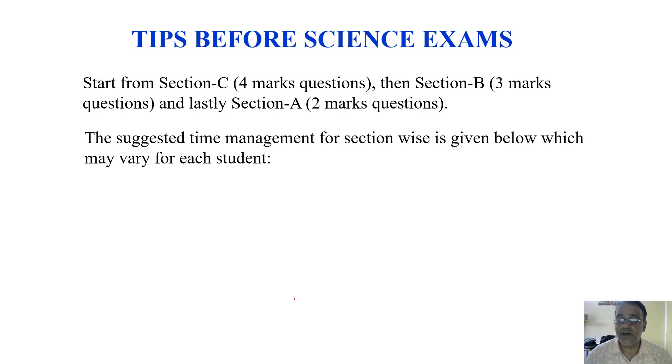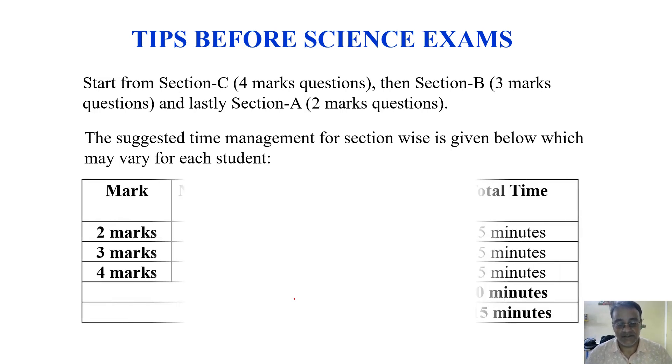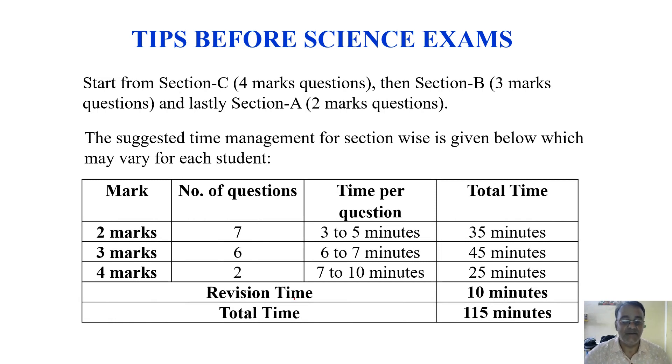So now I will show some time management advised from my side. Two marks questions: we know that it is seven questions and you have to give time three to five minutes, so not more than 35 minutes overall. Three marks questions: total six questions, say six to seven minutes, not more than 45 minutes. And the last section C, four marks, the case study questions: my suggested time is seven to ten minutes but not more than 25 minutes. So all together 105 minutes plus revision time 10, so total 115 minutes. This is the time suggestion suggested by me and it will differ from student to student.